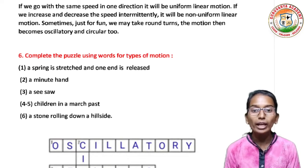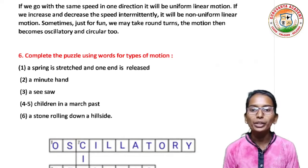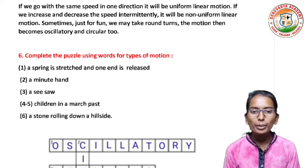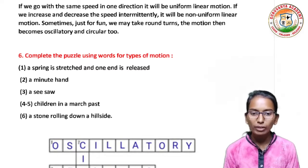If we go with the same speed in one direction, it will be uniform linear motion. If we increase and decrease the speed intermittently, it will be non-uniform linear motion. Sometimes, just for fun, we may take round turns, and then the motion becomes oscillatory and circular.